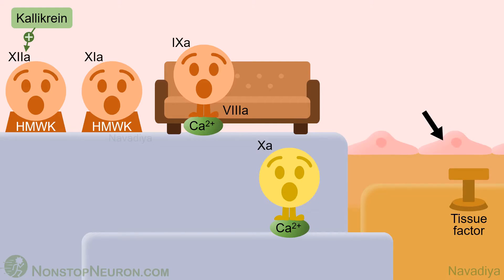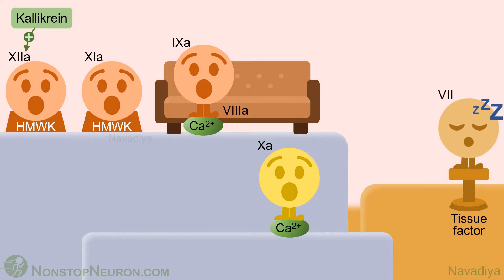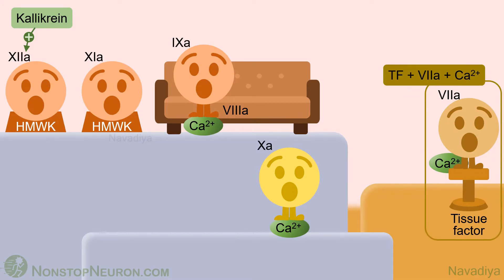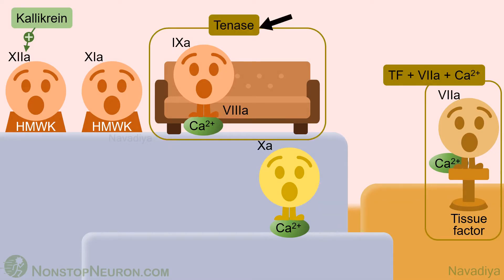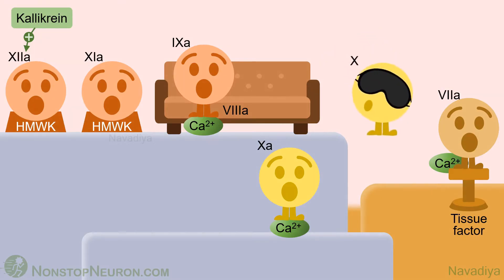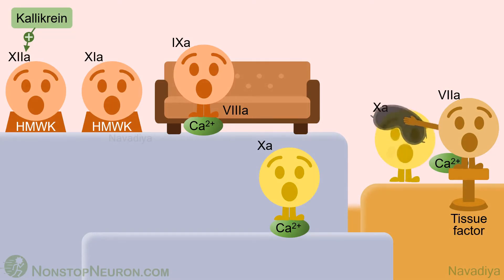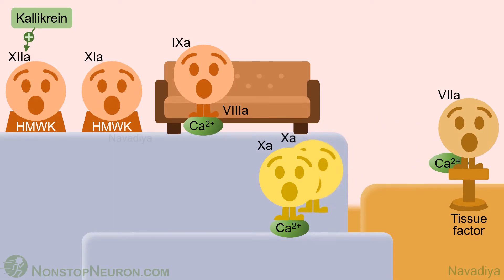But when endothelium is disrupted, the tissue factor is exposed. So now factor 7 from the blood binds with tissue factor. Then tissue factor activates factor 7 in a non-proteolytic manner. They further associate with calcium to form the tissue factor–factor 7a–calcium complex. This is similar to the tenase complex. Like tenase, this complex also activates factor 10, which is the common end product of both the intrinsic and extrinsic pathways.